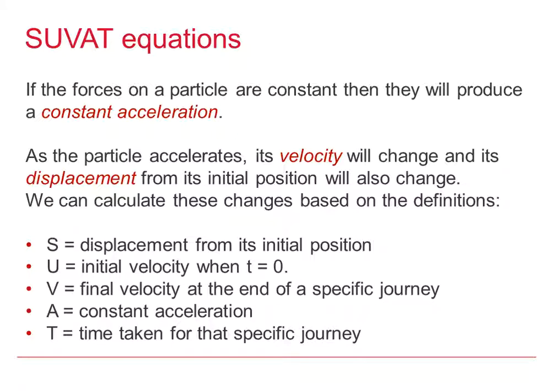S represents the displacement of the particle from its initial position. U represents the initial velocity when t was 0. V represents the final velocity at the end of our specified journey. A represents the constant acceleration, and T represents the time taken for that specific journey. Hence, we call these the SUVAT Equations.